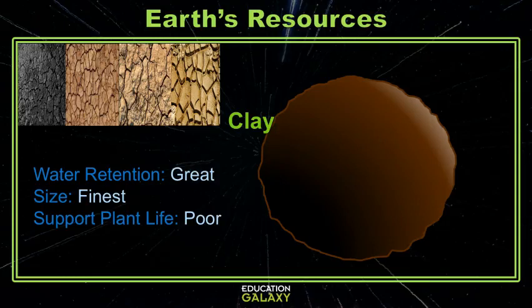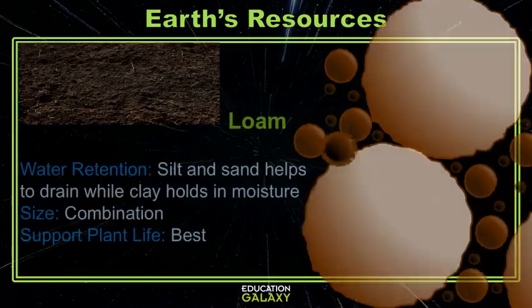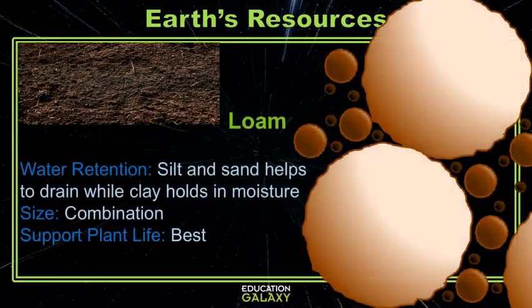It doesn't readily absorb water when it's dry and cracked, which also prevents plants from thriving. The last type of soil is loam. This is a perfect mixture of sand, silt, clay, and humus. Loamy soil is ideal for plant growth and for water retention.